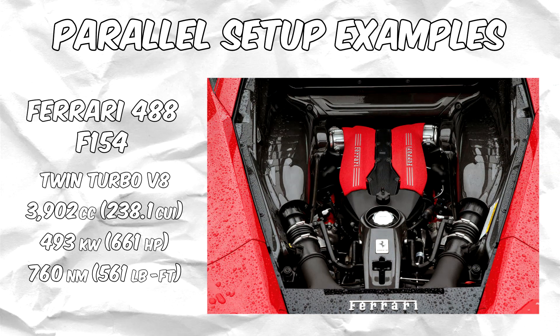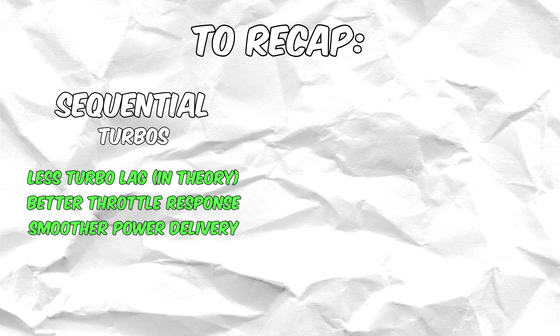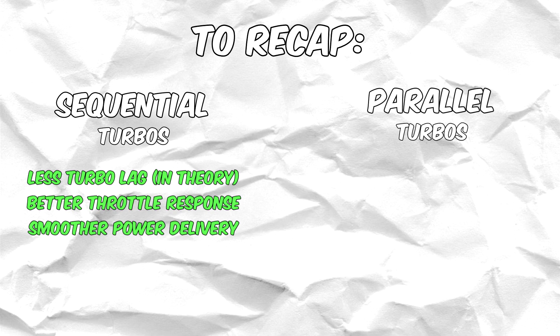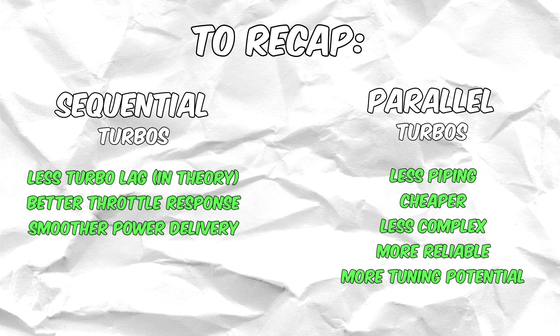To end this video, let's recap the two setups' advantages and disadvantages. Sequential turbos usually have less turbo lag, better throttle response, and smoother power delivery in comparison to parallel turbos. However, parallel turbos usually have less piping, are cheaper, less complex, and tend to be more reliable, as well as having bigger tuning potential. This is why parallel turbo systems are much more common in modern cars, as there isn't much difference in lag thanks to technologies such as twin-scroll turbocharging and variable geometry turbos.